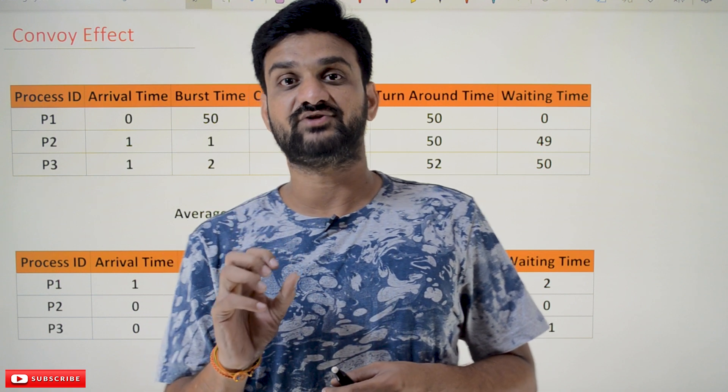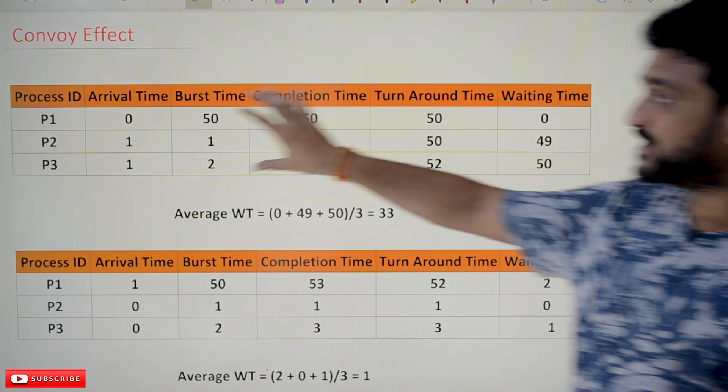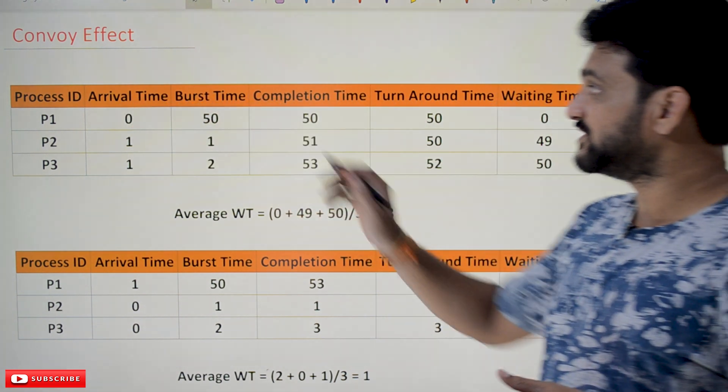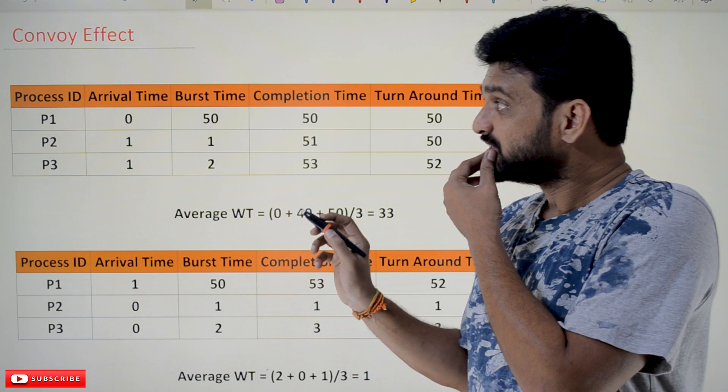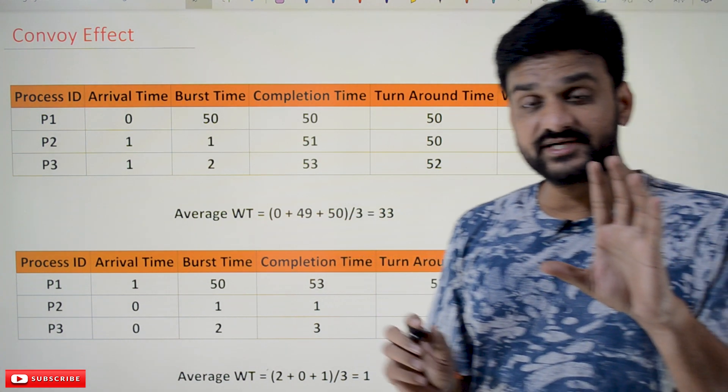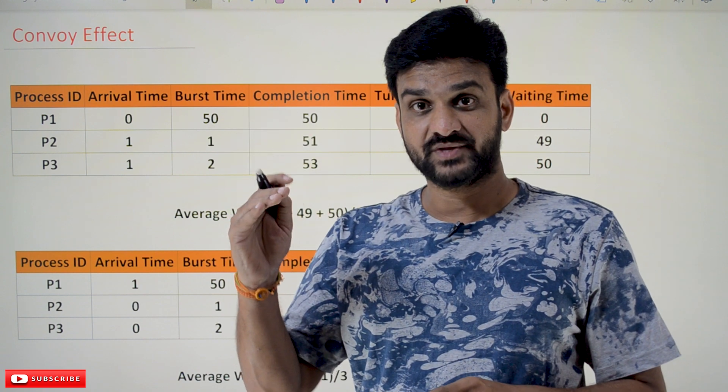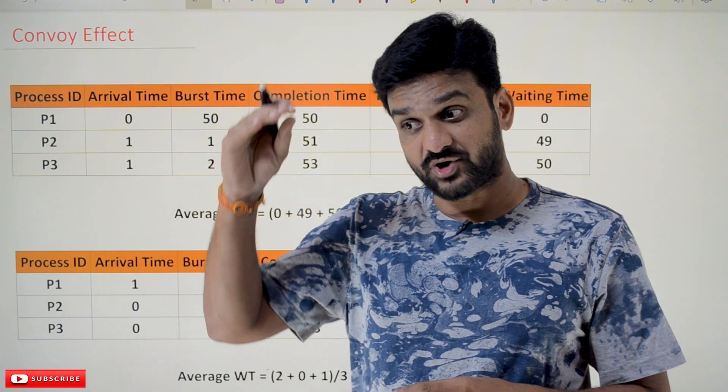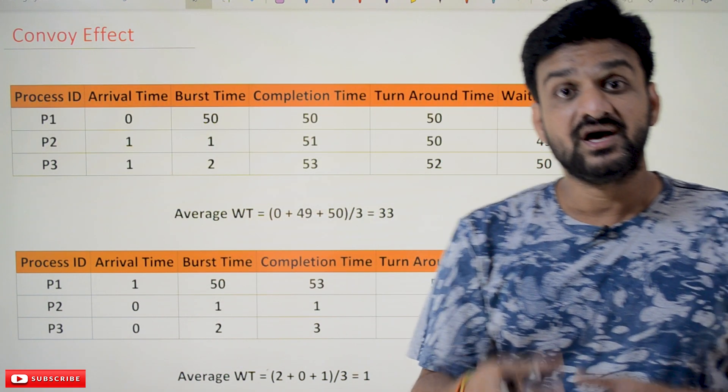How it is going to happen and why it is going to happen—we will try to understand by using these tabular forms. In this we are having processes with some arrival time, burst time, completion time, turn around time, and waiting time. We have already discussed that FCFS is based upon the arrival time. Based upon the arrival time, the processes are picked from the ready queue and will be passed on to the running state.